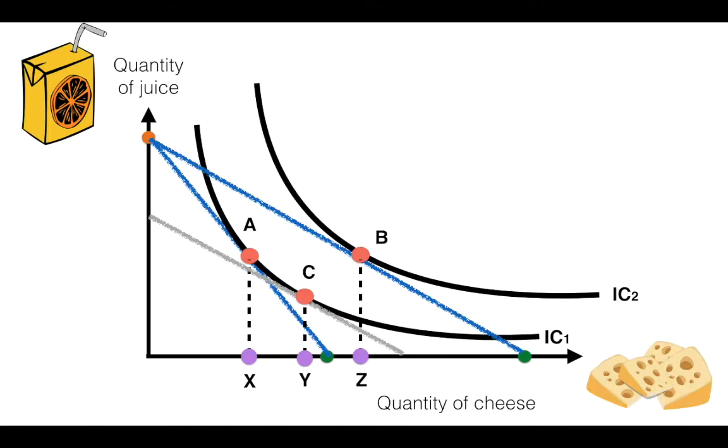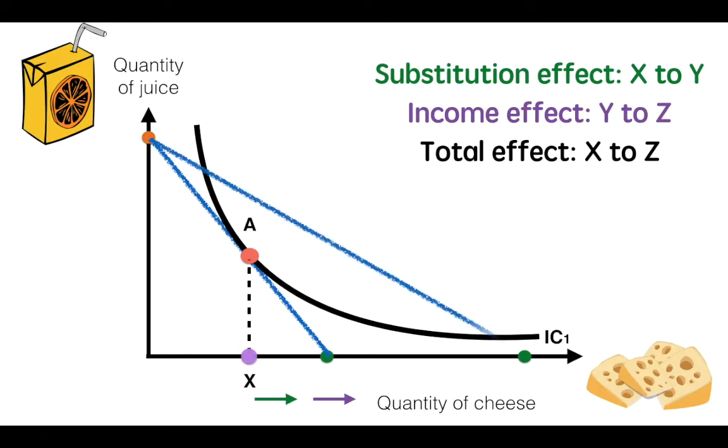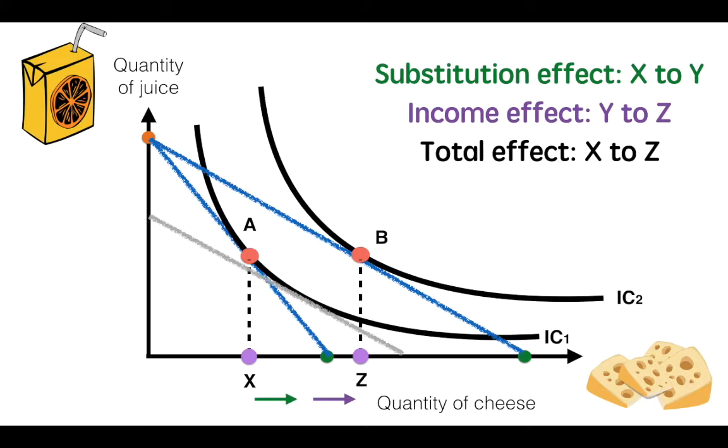The substitution effect is then represented by the movement from X to Y units of cheese. The income effect, therefore, is the movement from Y to Z units of cheese. The combined movement from X to Z is the total effect of the price change. Again, the income effect is the value between Y and Z units of cheese, while the substitution effect is the value between X and Y units of cheese.